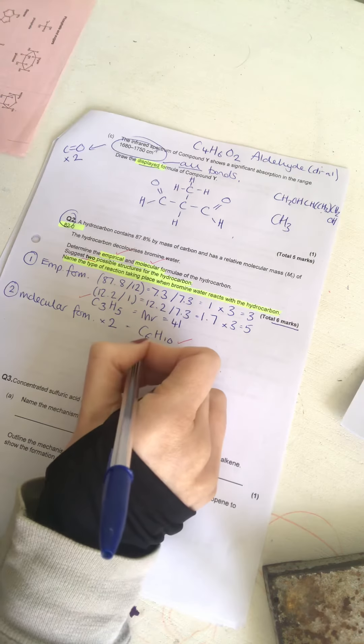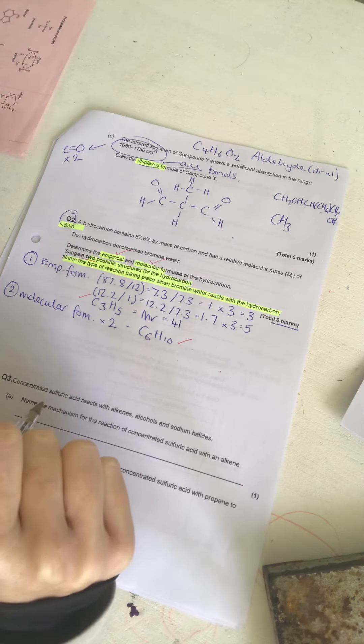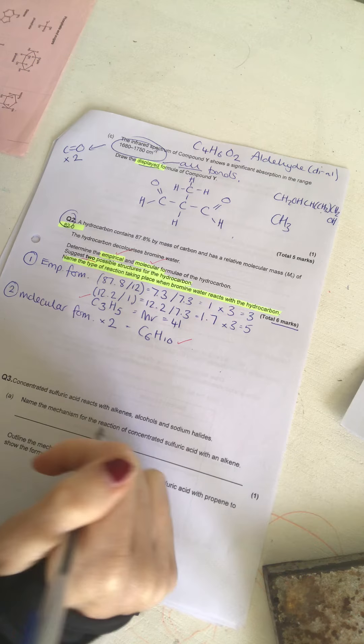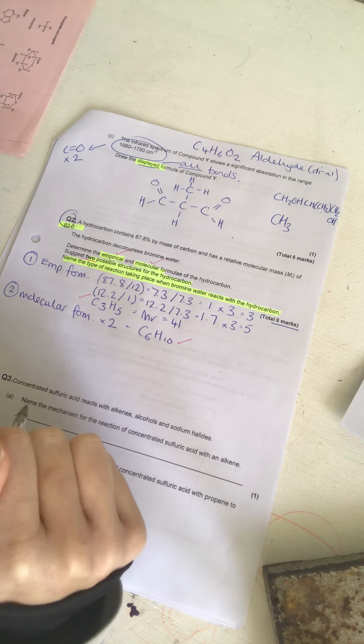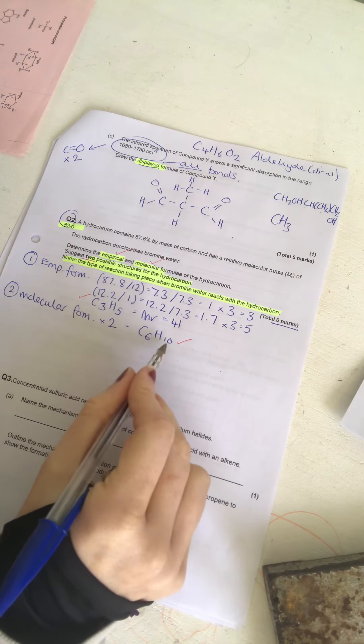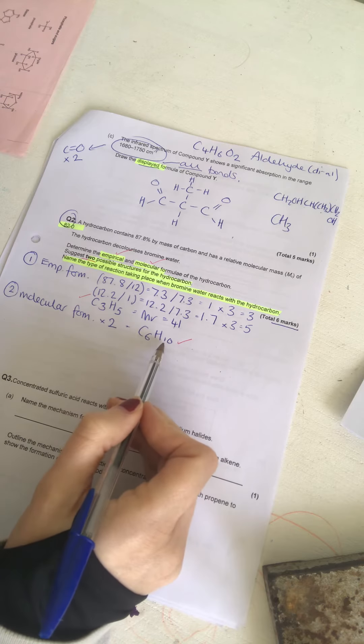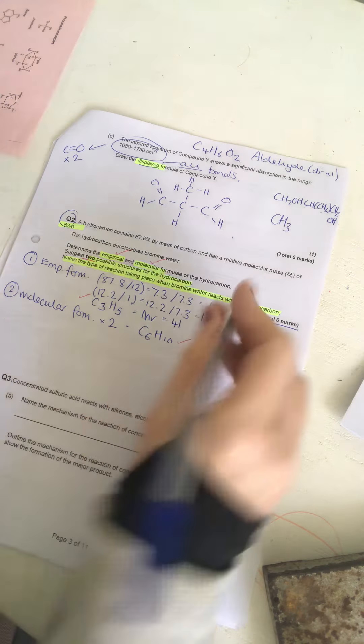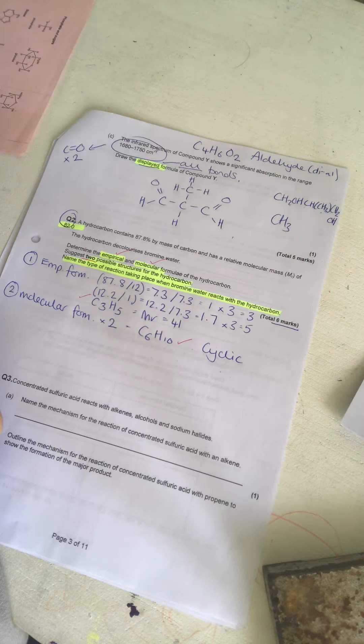Now, I'm going to suggest two possible structures for the hydrocarbon. Now, you need to remember your general formulas here. An alkene has the general formula, obviously, CnH2n, which would mean we would have C6H12. We've got C6H10. That must mean that our structure is cyclic and that it's unsaturated.